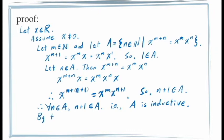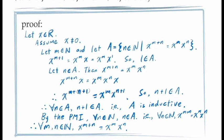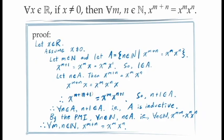The principle of mathematical induction tells us that since A is an inductive set containing the number 1, A contains all of the natural numbers, and so our equation holds for all natural number values of n. Since m was an arbitrary natural number, the principle of universal generalization tells us that the equation also holds for all values of the natural number m. And since x was an arbitrary real number not equal to zero, we know that this holds for all such real numbers.